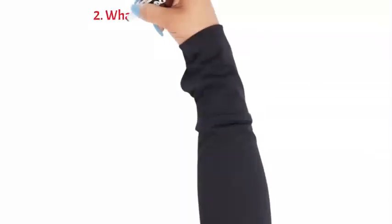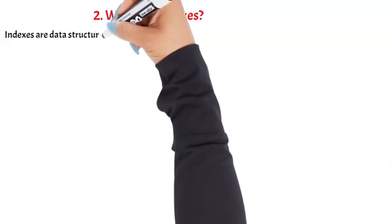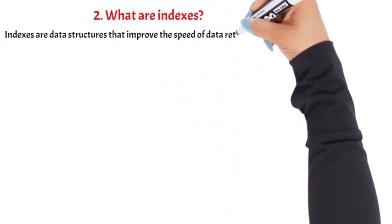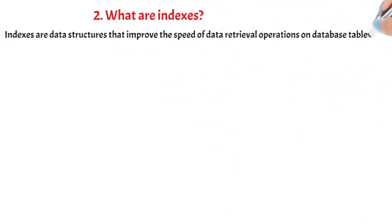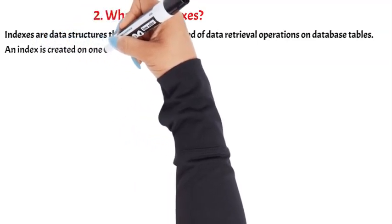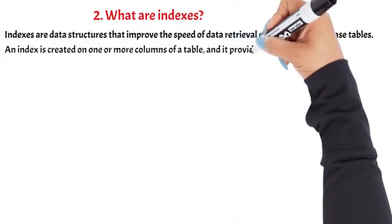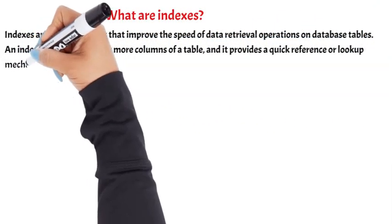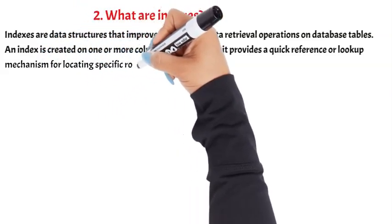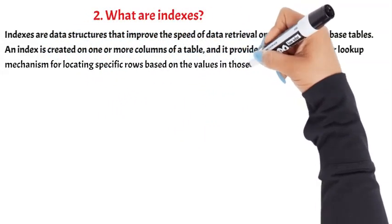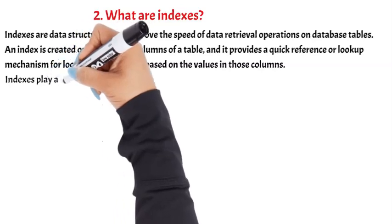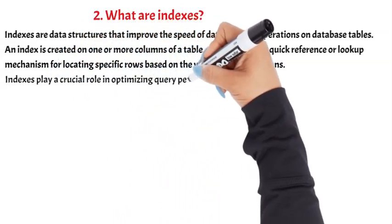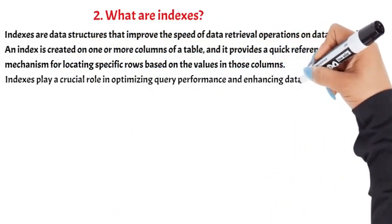What are indexes? Indexes are data structures that improve the speed of data retrieval operations on database tables. An index is created on one or more columns of a table, and it provides a quick reference or lookup mechanism for locating specific rows based on the values in those columns. Indexes play a crucial role in optimizing query performance and enhancing database efficiency.